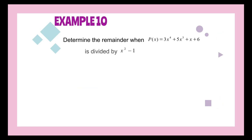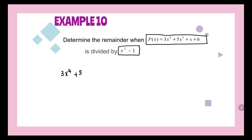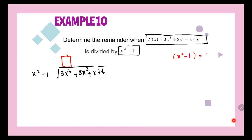As standard remainder theorem, we can choose to find the remainder by using long division. Since the polynomial 3x⁴ + 5x³ + x + 6 is divided by x² minus 1, we can attempt to answer this question using long division. To find the answer, first we need to write the expression in the box such that when it multiplies with x² minus 1, we get 3x⁴.